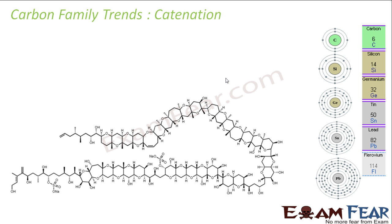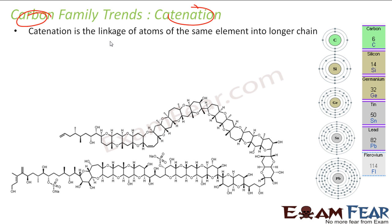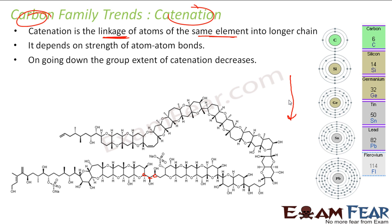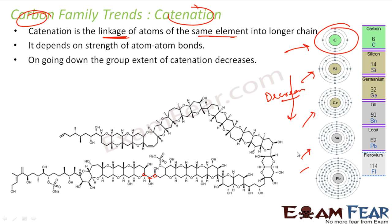There is a unique property in the carbon family called Catenation. Catenation is the property to form big chains by forming bonds with the same element or other elements. Carbon has the most extensive catenation — there are many long-chain carbon compounds. Silicon has less, and going down the group, it always decreases. Catenation is a critical property of the carbon family, and that's the reason why we have the whole of organic chemistry. This property decreases as we go down the group.